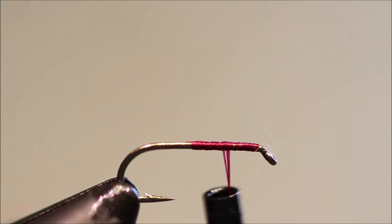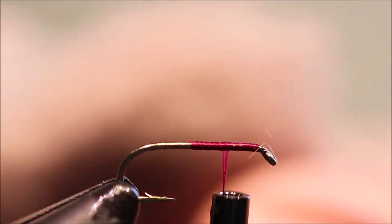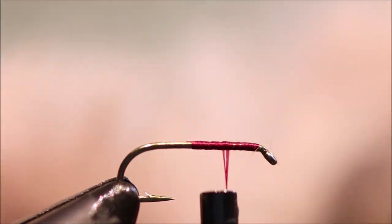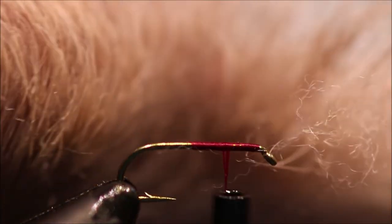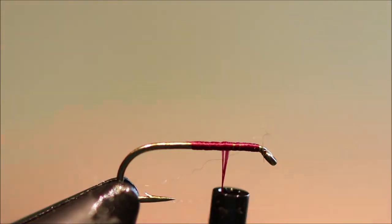For the wing, I'm using Snowshoe Rabbit. This one's been dyed Dunn. I don't know how well you can see that. It's a nice colour for the Iron Blue, or any others really.